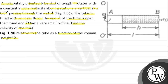So, the tube is horizontal, AB, of length L, rotating with constant angular velocity about a stationary vertical axis. The tube is filled with an ideal fluid. End A is open, end B is closed with a very small orifice. We need to find the velocity of the fluid.